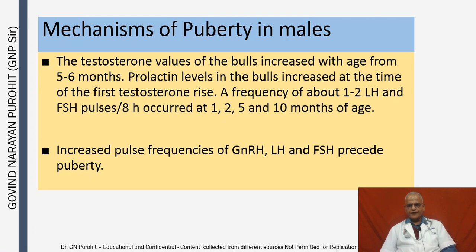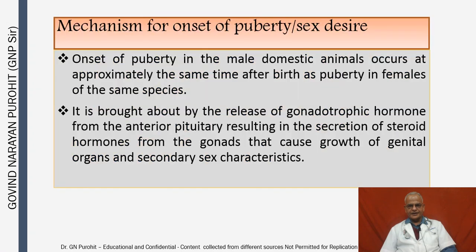Studies have tried to find the actual mechanism of puberty. Testosterone values in bulls increase with age from five to six months, and prolactin levels in bulls increase at the time of the first testosterone rise. A frequency of about one to two LH and FSH pulses per eight hours occurred at one, two, five, and ten months of age in one study. Increased pulse frequencies of GnRH, LH, and FSH precede puberty, reflecting a complex role of nutrients and hormonal secretions that collectively result in puberty in males.